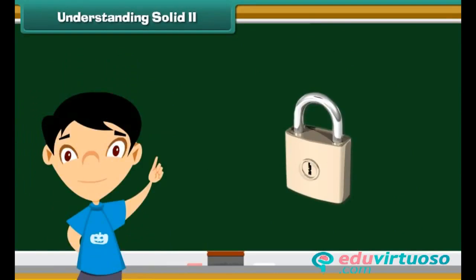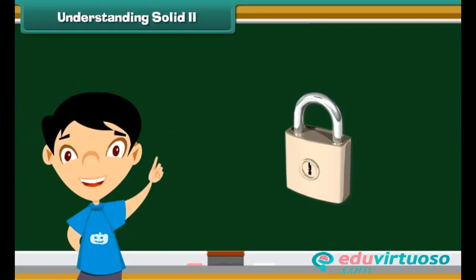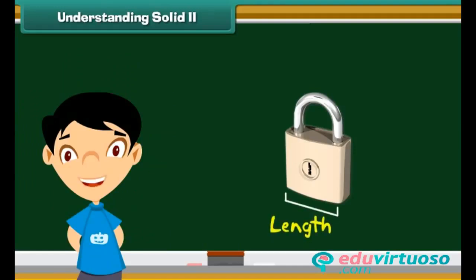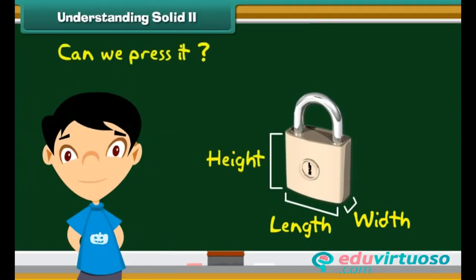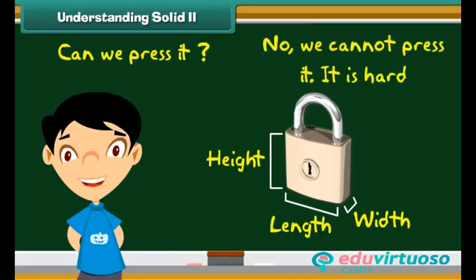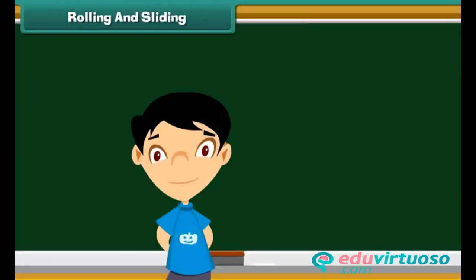Now see this lock. Is this a solid? You are correct — this lock is a solid. It has a fixed shape, it has length, width, and height. And can we press it? No, we cannot press it. It is hard.